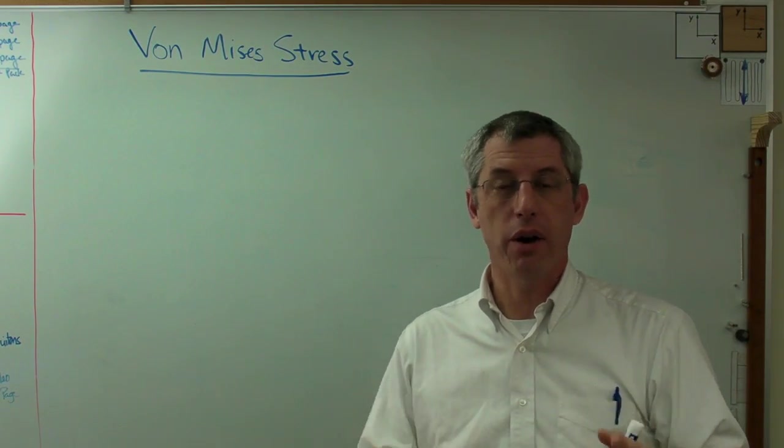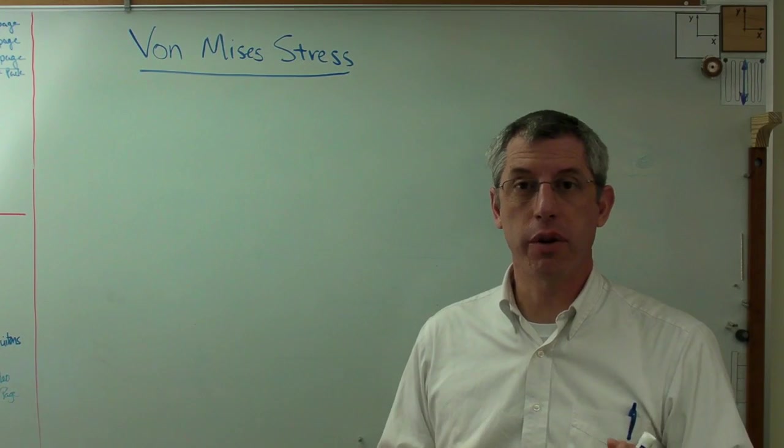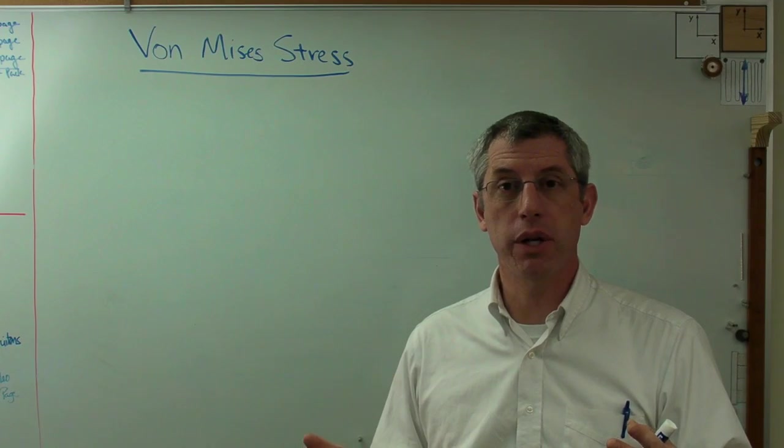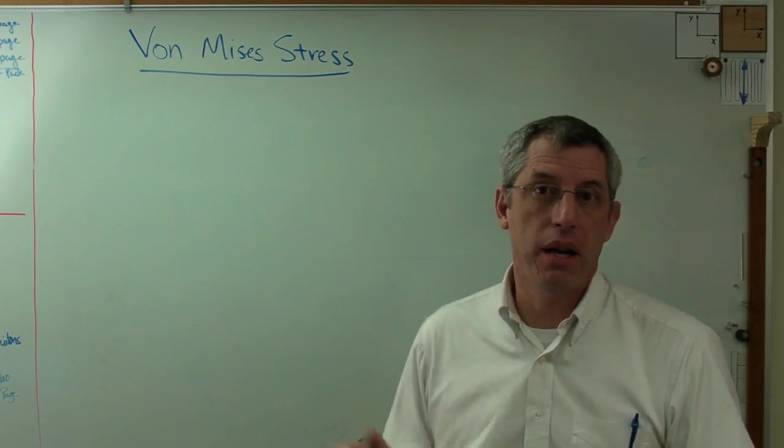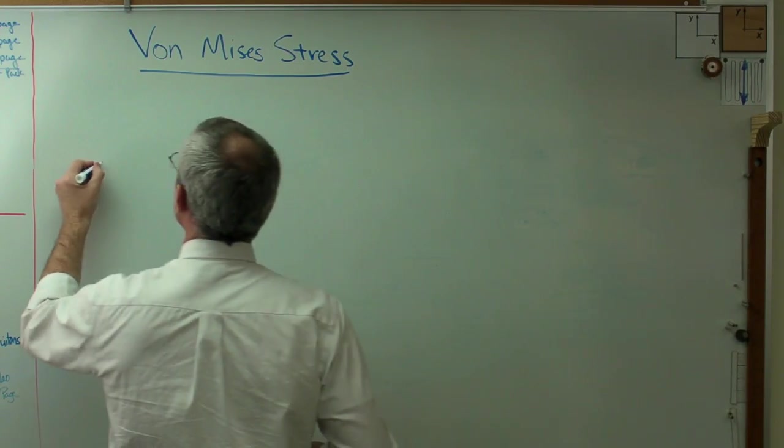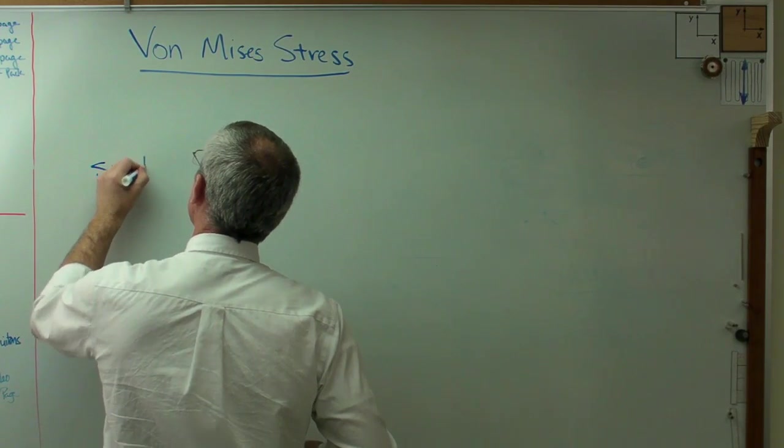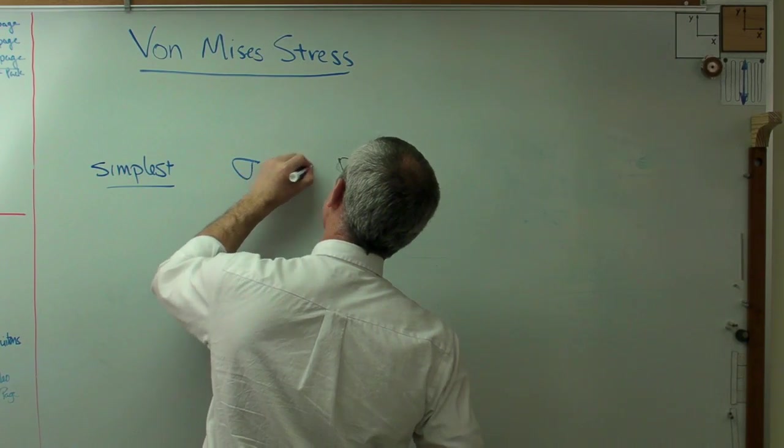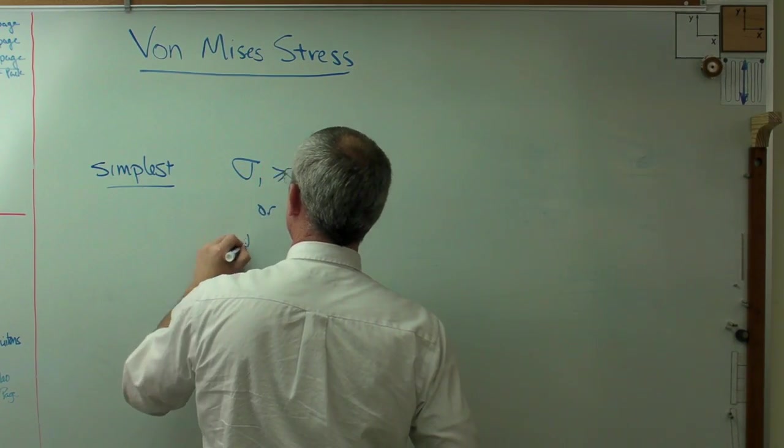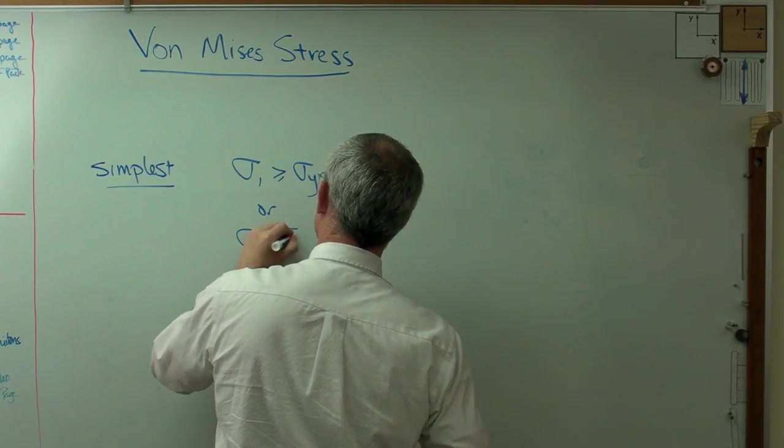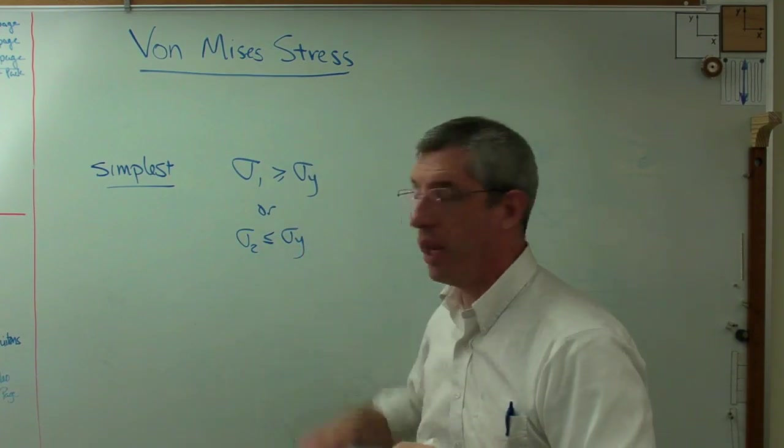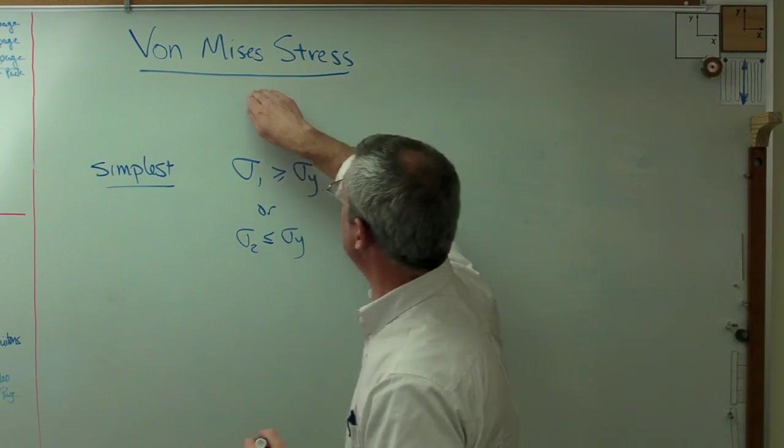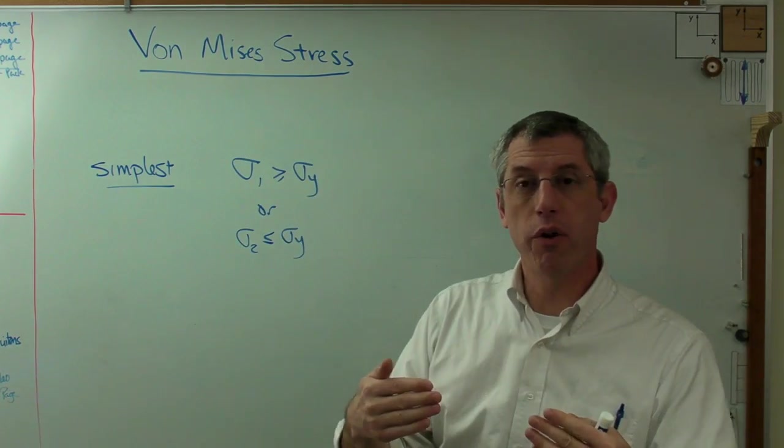Up till this point in your strength of materials or mechanics of deformable solids career, you might have just said, well, I'll calculate maximum stresses in whatever direction using Mohr's circle. And said, well, if any of the maximum or minimum stresses exceed yield, then I've got failure. So the simplest one we use is to say, well, sigma 1 is greater than or equal to sigma yield, or sigma 2 is less than or equal to sigma yield, assuming this is negative. Either one of those constitutes failure. Well, Von Mises stress goes one further than that.